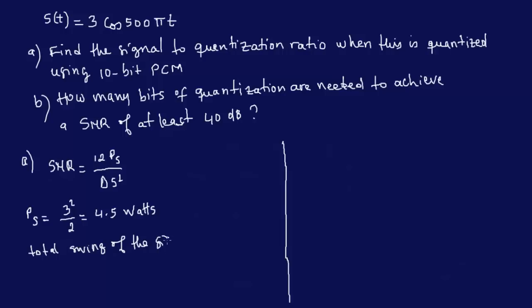So to calculate the size of the interval, we have to divide that by 2 to the power of the number of bits. We have 10-bit PCM here. So delta S would be equal to your swing, which is 6 volts in this case, over 2 to the power of your number of bits, which gives us 5.86 times 10 to the power minus 3.